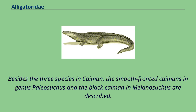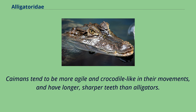Besides the three species in Caiman, the smooth-fronted caimans in genus Paleosuchus and the black caiman in Melanosuchus are described. Caimans tend to be more agile and crocodile-like in their movements, and have longer, sharper teeth than alligators.